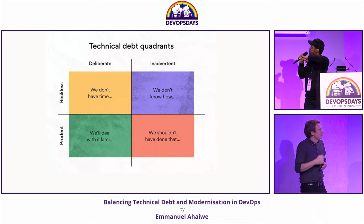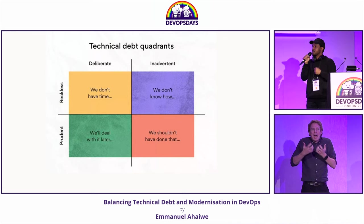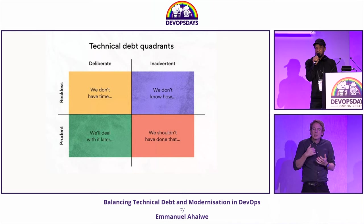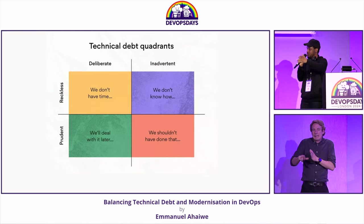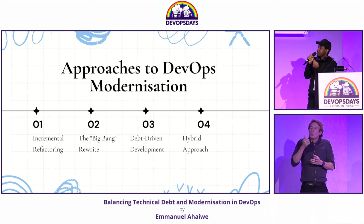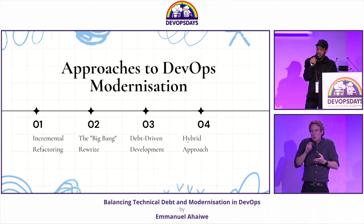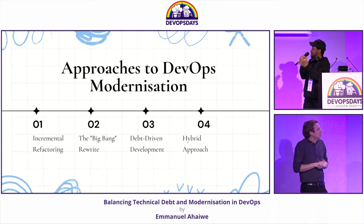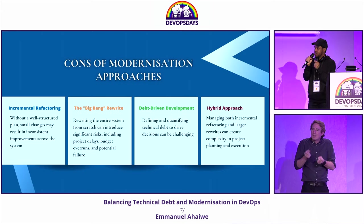This is a quadrant that describes how technical debt comes about. Sometimes it's intentional, sometimes it's just kicking the ball down the road — someone else will deal with it. We need to know that we will pay for it at some point. There are different ways to pay for it: incremental refactoring, big bang rewrite, hybrid approach, debt-driven development. There are different approaches we need to note.